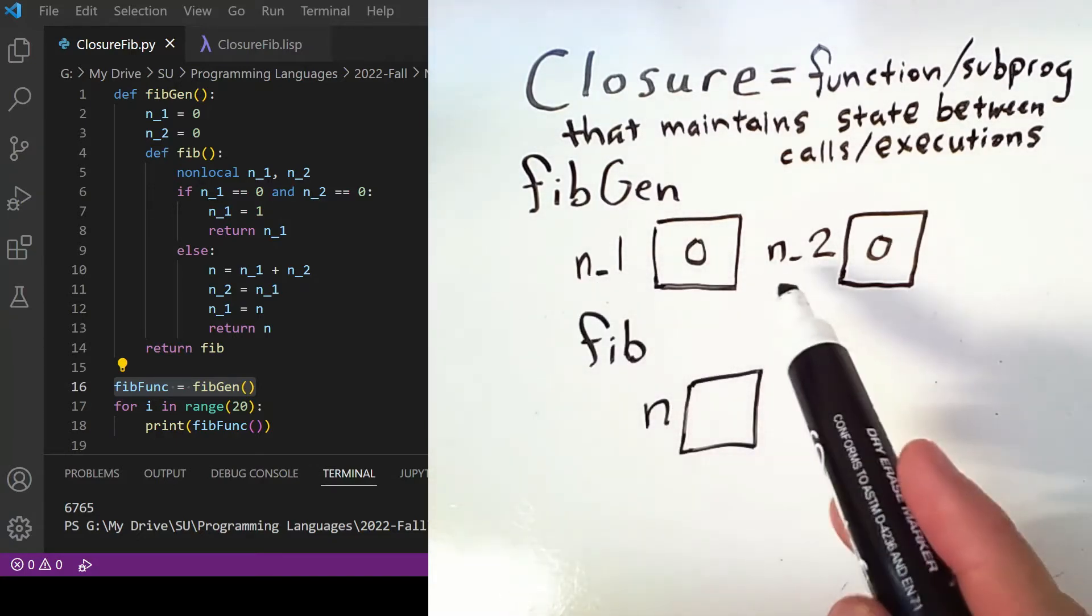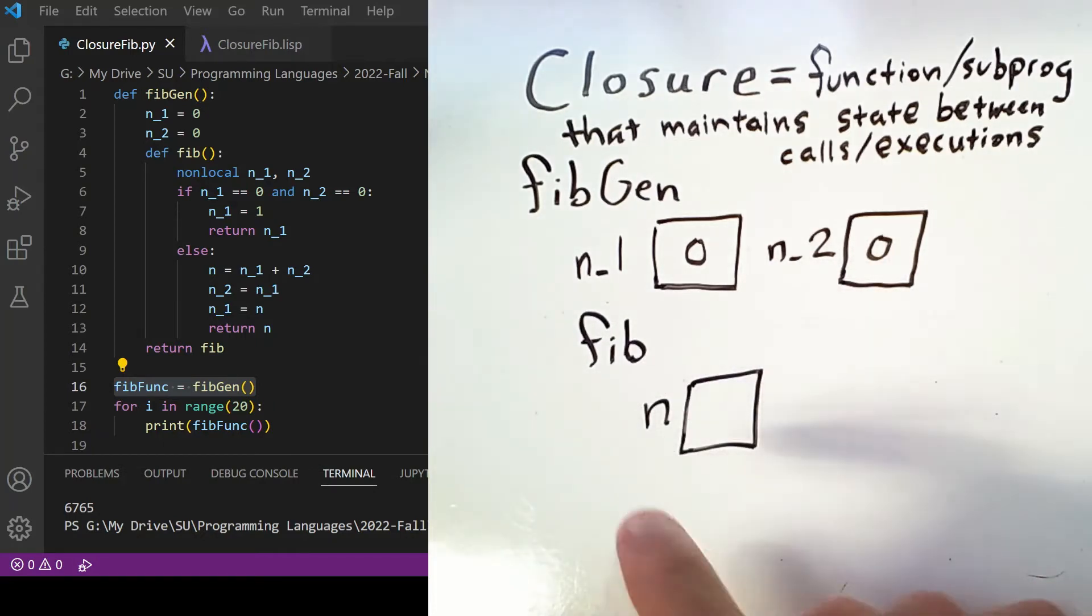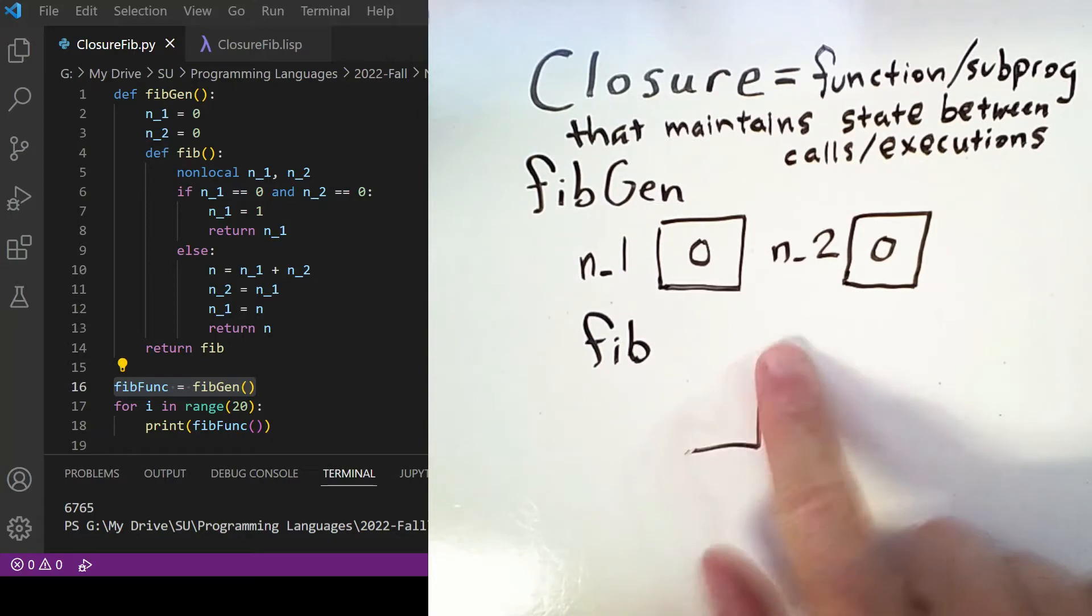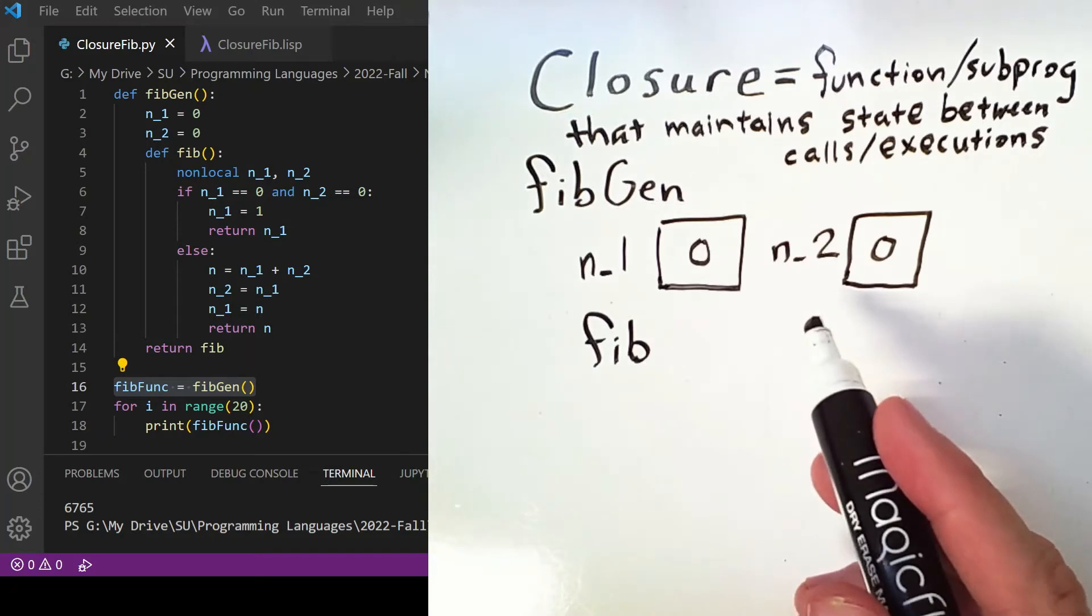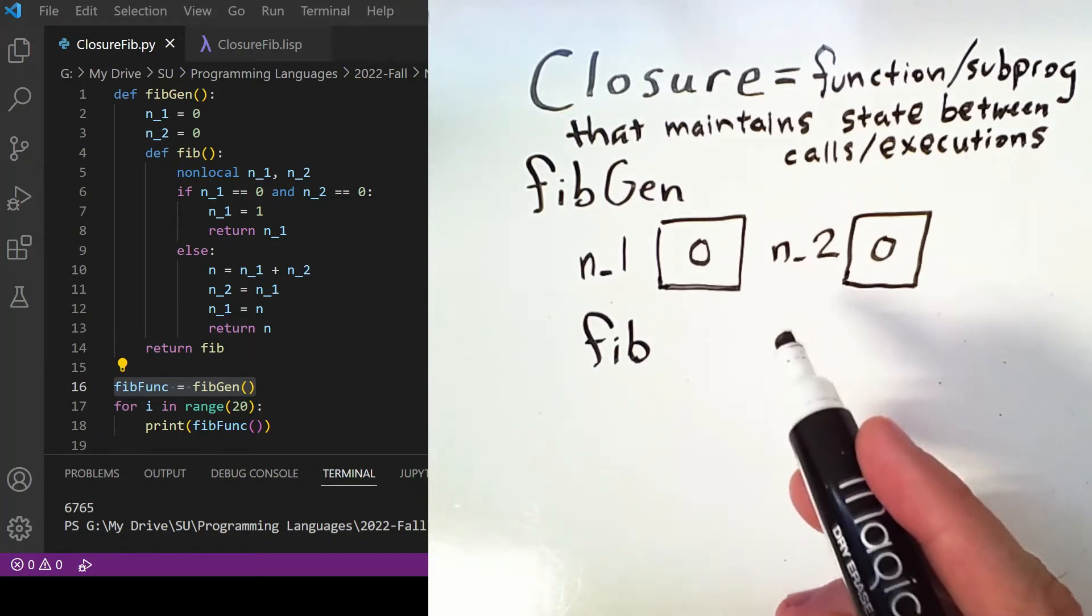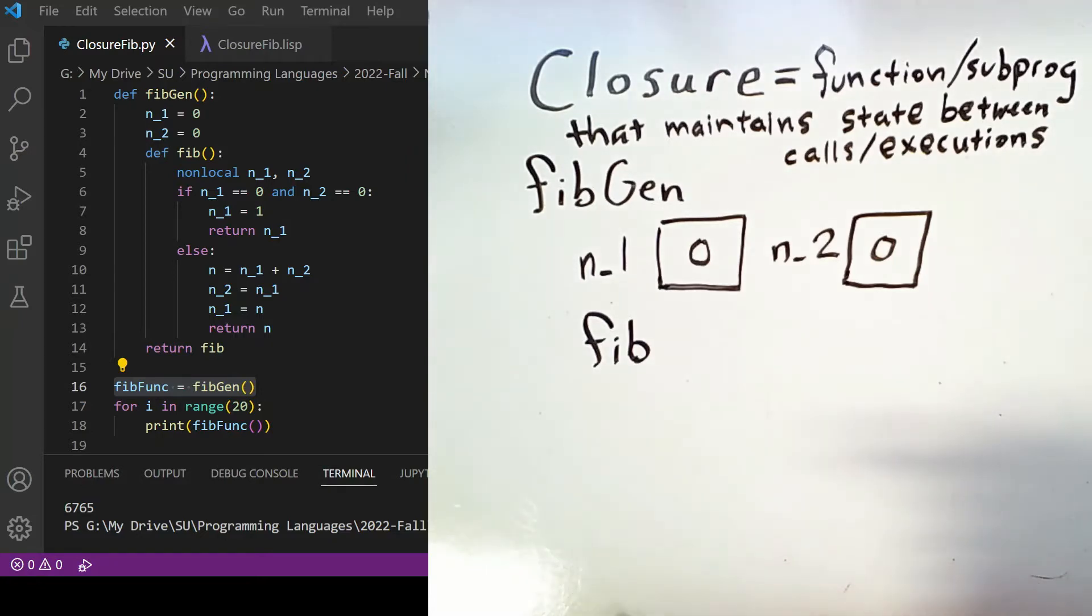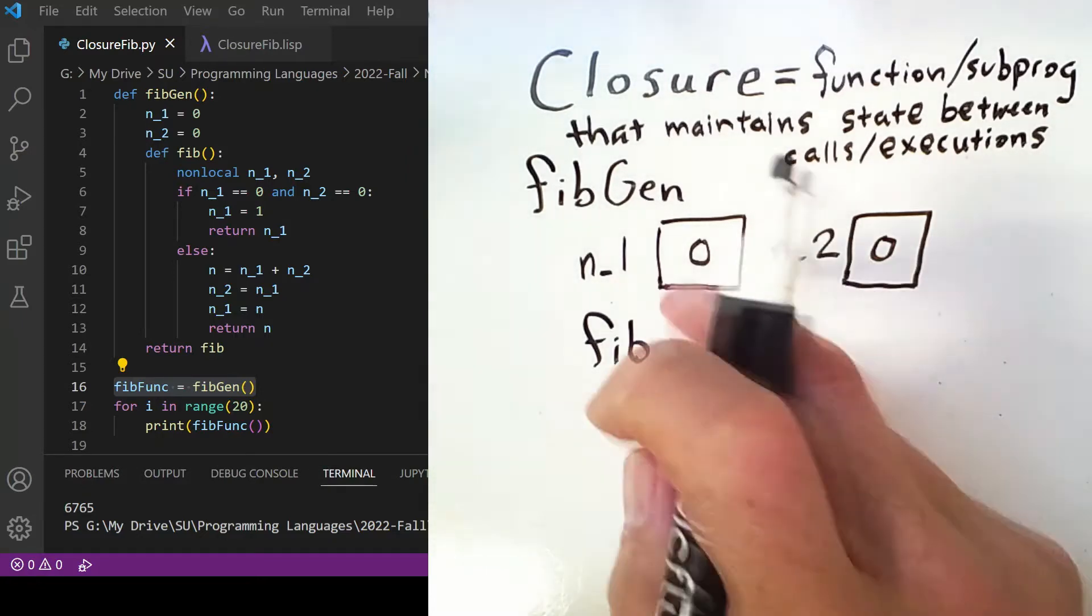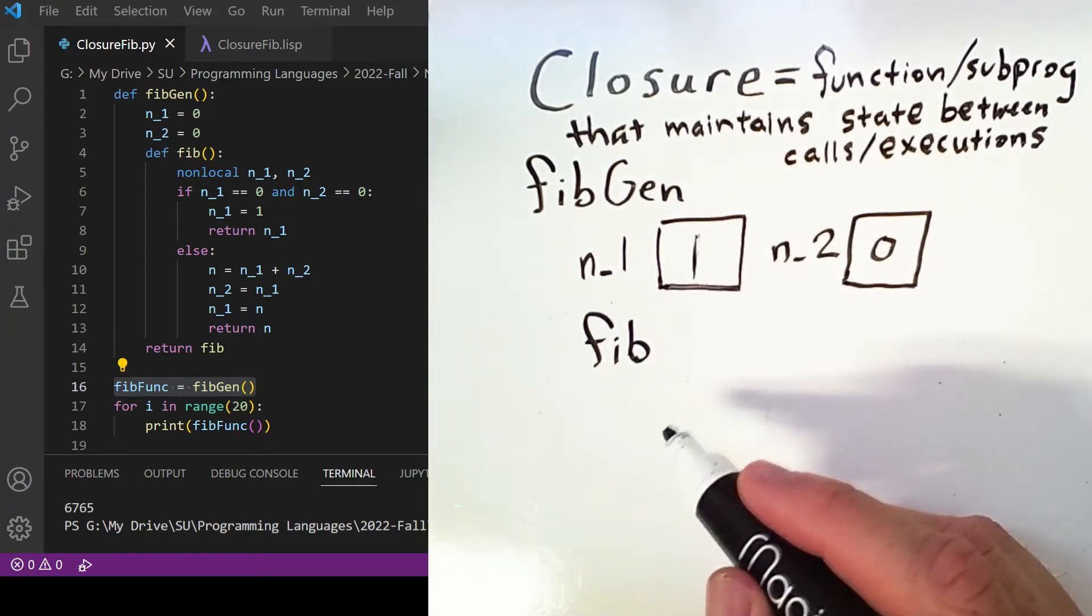n1 and n2 are both zero initially, so the very first time that fib is called, the local variable n actually isn't defined because we end up in the first case of this if-else statement. It is indeed true that n1 and n2 are both zero. Note however that we modify the value of n1 inside that case—n1 is set to one before a value is returned, namely one.